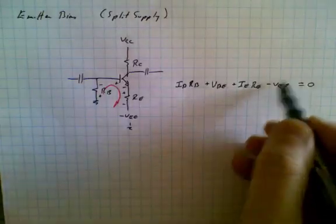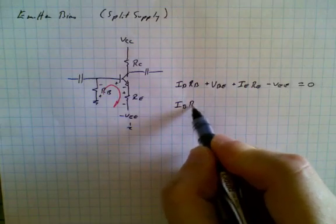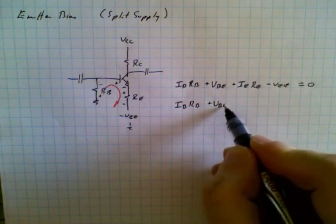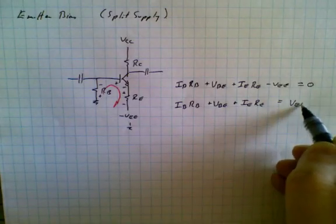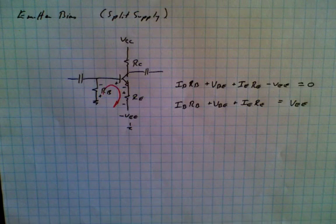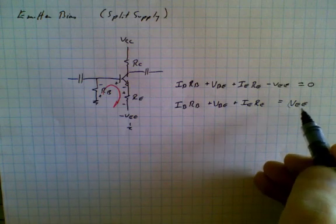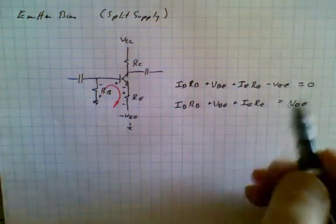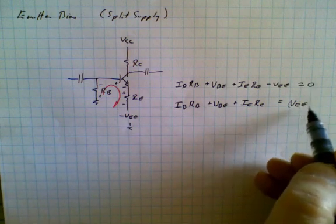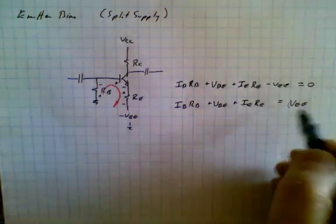Now we'd like to move VEE over to the right-hand side, and we'll notice a little peculiarity we have to be careful about. So we have IB·RB plus VBE plus Ie·Re is equal to VEE. It is possible to make calculation errors — for example, if the minus VEE supply is minus 10 volts, it would be easy to drop minus 10 in here and have one side negative and the other positive. We have to make sure whatever we substitute remains positive to keep the equation balanced.